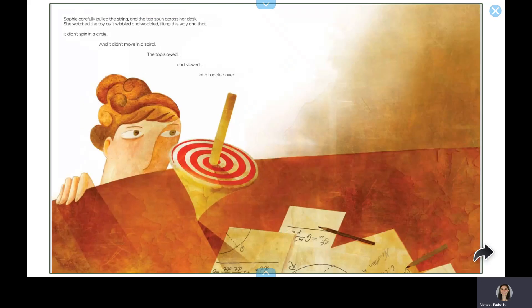Sophie carefully pulled the string and the top spun across her desk. She watched the toy as it wibbled and wobbled, tilting this way and that. It didn't spin in a circle, and it didn't move in a spiral. The top slowed and slowed and toppled over.